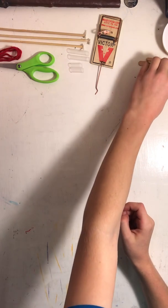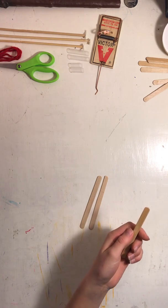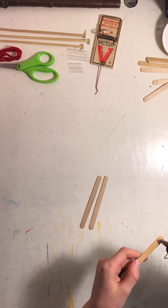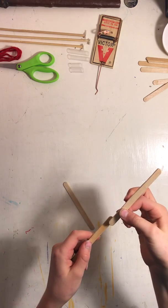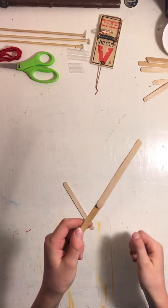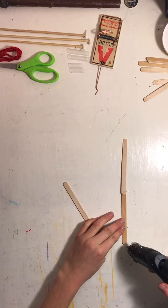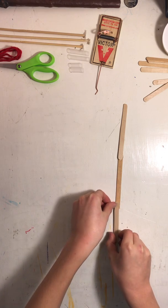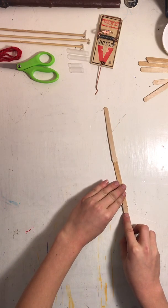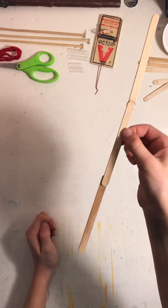The first step is to take three popsicle sticks. Take a glue gun that's already heated and put a bit of glue on one end. Next, take another popsicle stick and attach them together like that. Repeat the same step on the other end. Then you should have three popsicle sticks joined together that look like that.